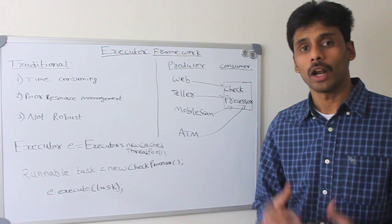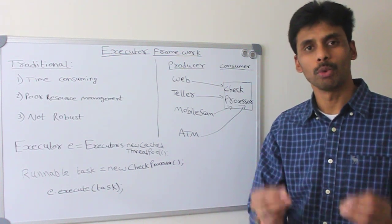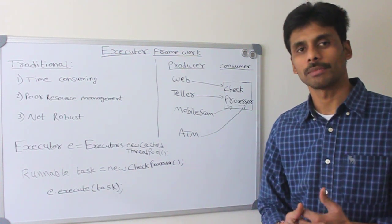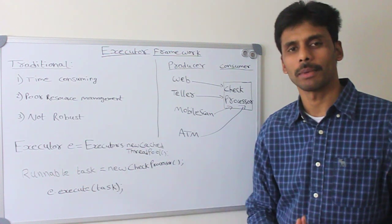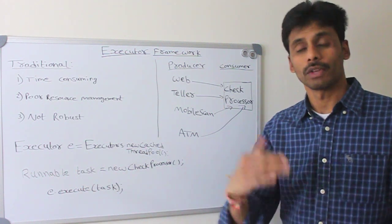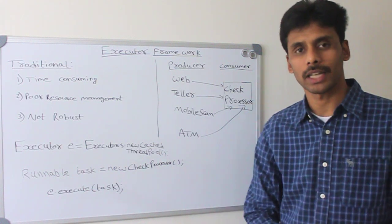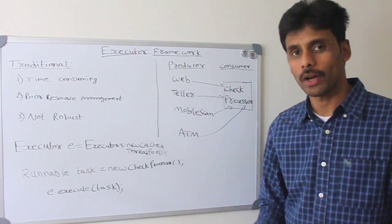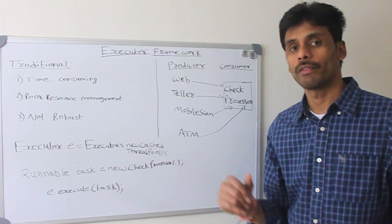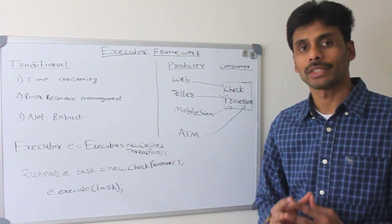When the server starts up, typically a lot of database connections are created and pooled up. So when the user request comes in, we need not create a fresh database connection. We can just reuse the database connection and then when the job is done, the database connection goes back to the pool. Very similar concept here, but the executor framework manages the entire life cycle for us.